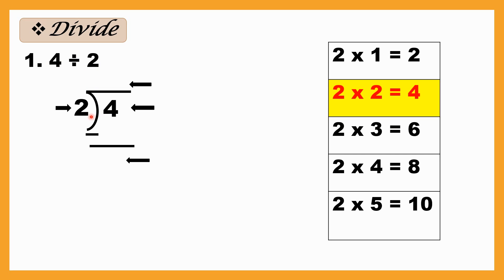So we have 2 outside and 4 inside. Now we look at the 2 times table to see if 4 appears: 2 ones are 2, 2 twos are 4. Yes, 2 twos are 4, so 4 goes into the 2 table 2 times. We write this 2 on top. Then 4 minus 4 equals 0.